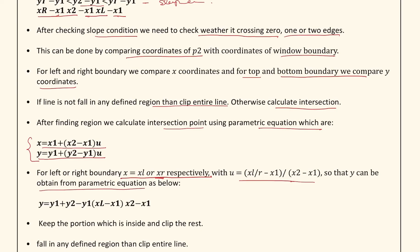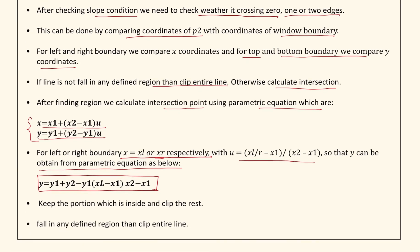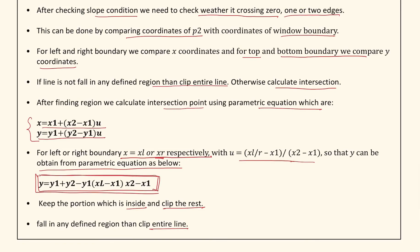After finding the region, we calculate the intersection point using parametric equations: x = x1 + (x2 - x1) * u and y = y1 + (y2 - y1) * u. For left or right boundary, x equals xl or xr respectively, with u = (xl - x1) / (x2 - x1). Therefore y = y1 + (y2 - y1) * (xl - x1) / (x2 - x1). Keep the partition which is inside and clip the rest. This is our final equation for the NLN line clipping algorithm. Hope you are all clear with the NLN algorithm. Thank you for watching.